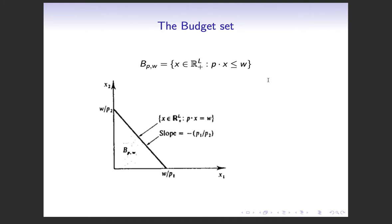So the Walrasian budget set, this is the notation from MWG, the budget set for a given P and W, where that's prices of price vector and wealth, is all X's in the non-negative reals in the Lth dimension. We have L goods such that the price of that bundle is less than our wealth. So in two dimensions, it's all points up to and including this line in the positive or the non-negative orthant.